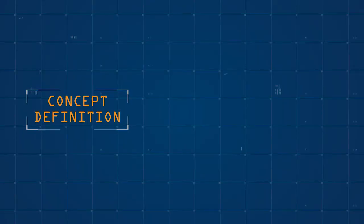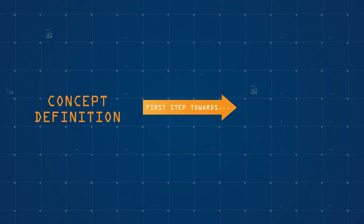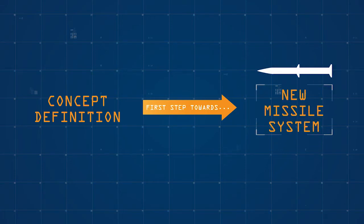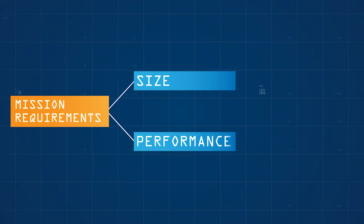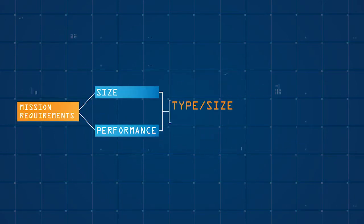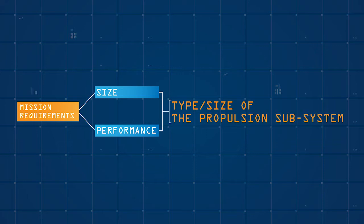Concept definition is the first step towards a new missile system. Mission requirements will determine the size and performance of a system, both of which are strongly related to the type and size of the propulsion subsystem.